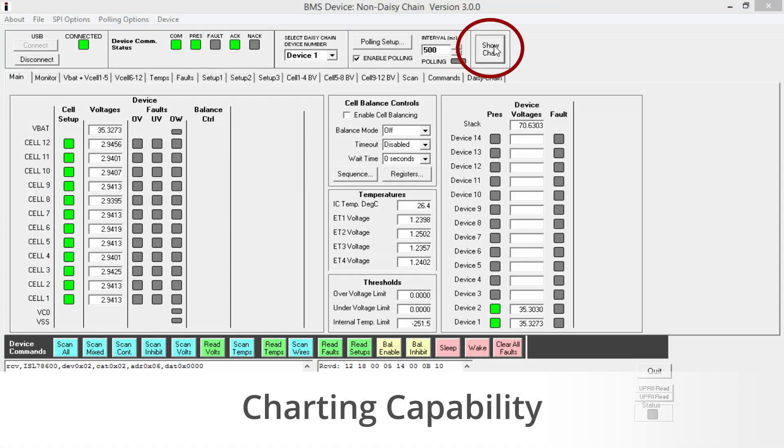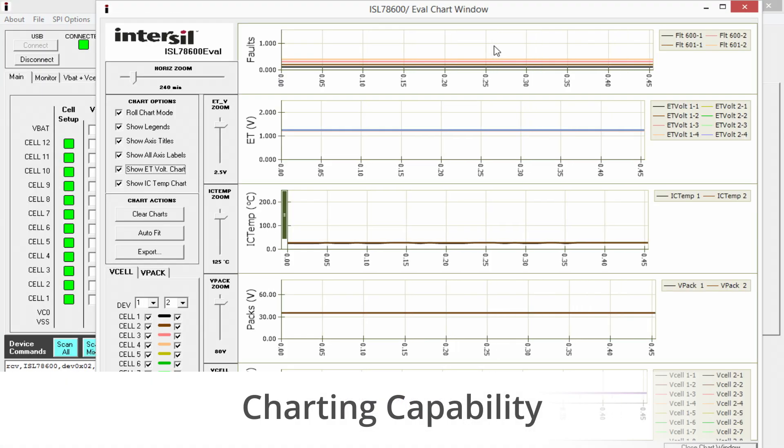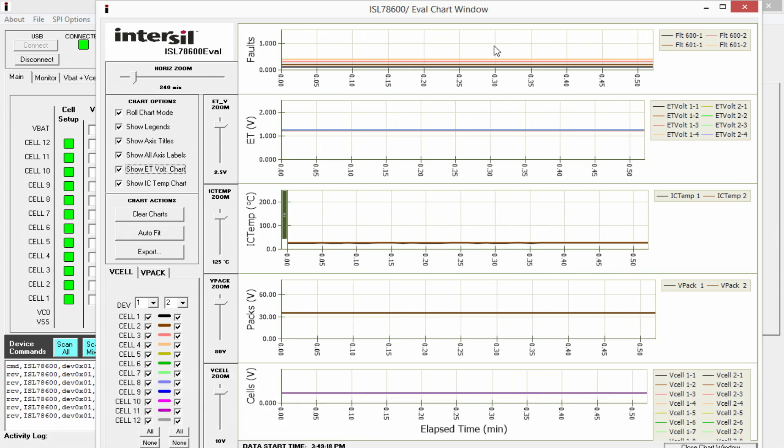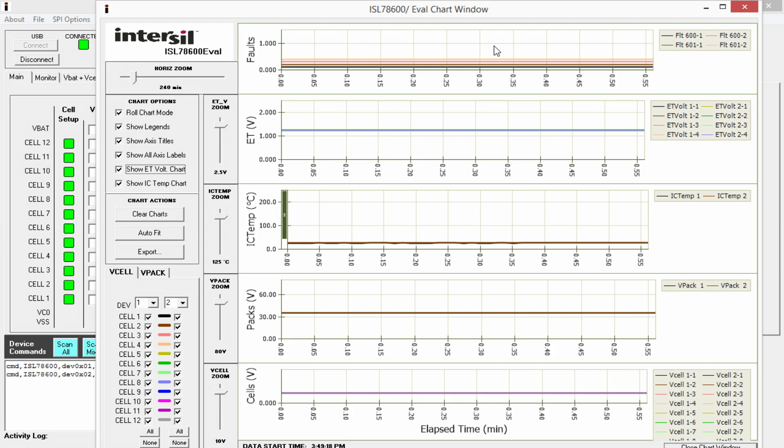Another really useful feature of the GUI is its charting capability. By clicking on this tab, you can see various user selectable parameters being charted. Charts can be exported to other applications such as Excel, for example, for further analysis.